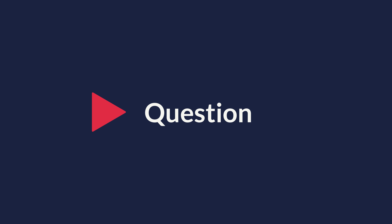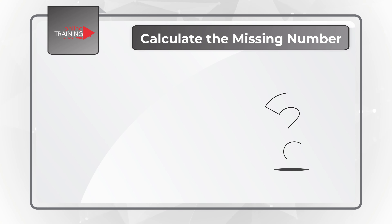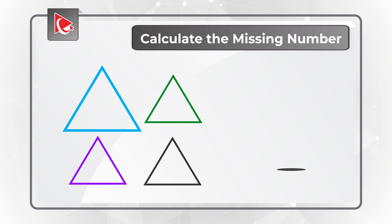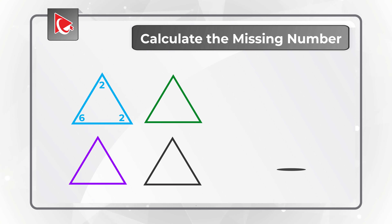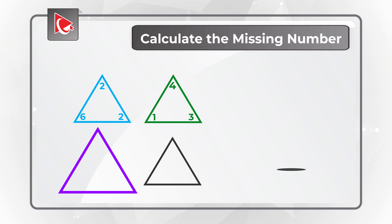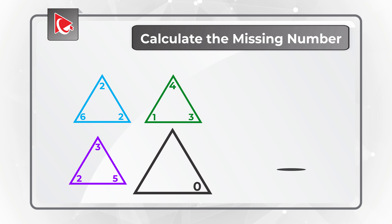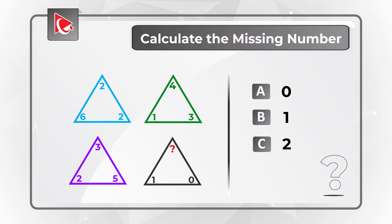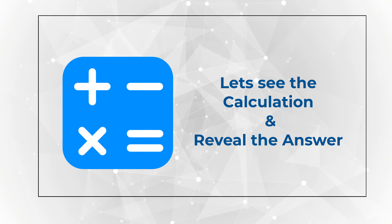Here is the famous 4-triangle question you regularly observe on the test. You need to calculate the missing number represented by the question mark. You are presented with 4 triangles of different colors. The blue triangle has numbers 2, 2, and 6. The green triangle has numbers 4, 3, and 1. The purple triangle has numbers 3, 5, and 2. And the black triangle has numbers 0, 1, and a missing number. Choices: A=0, B=1, C=2, D=3. There is a true calculation behind determining what the number is.